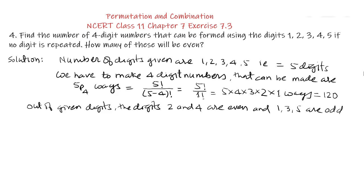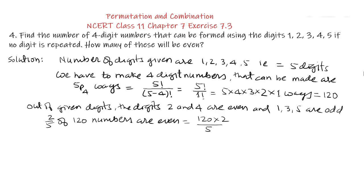So 2 out of 5 digits are even, meaning 2/5 of the 120 numbers are even. This is equal to 120 multiplied by 2, divided by 5, which equals 48. The remaining numbers will be odd. So our answer is: the 4-digit numbers that can be made are 120, and out of which 48 numbers will be even.